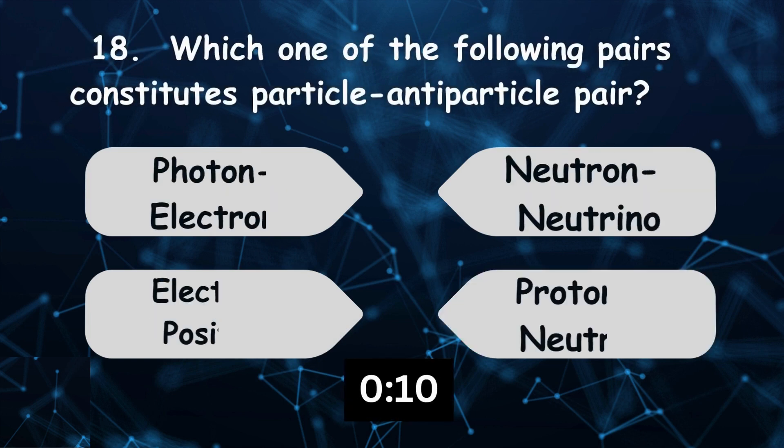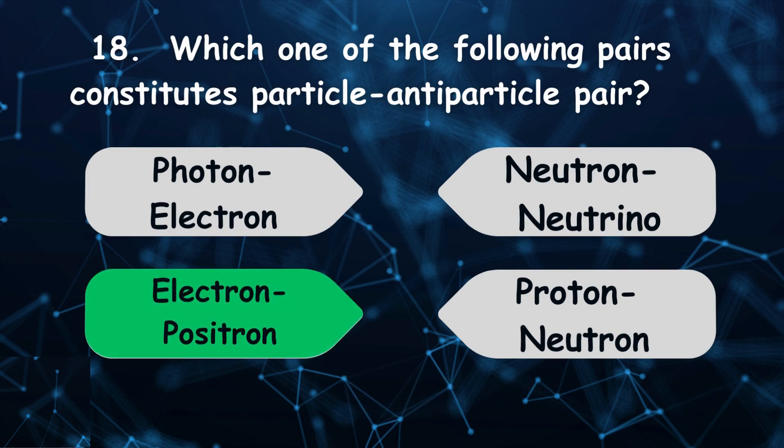Which one of the following pairs constitutes particle-antiparticle pair? The answer is electron positron.